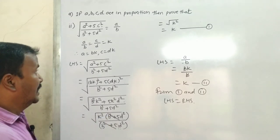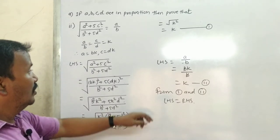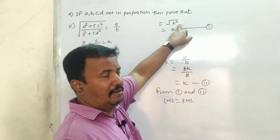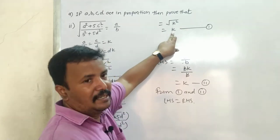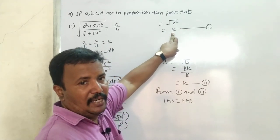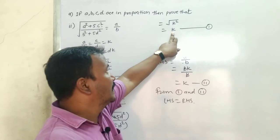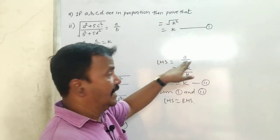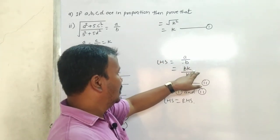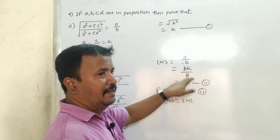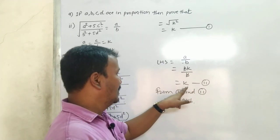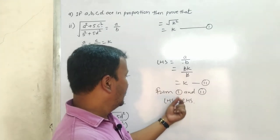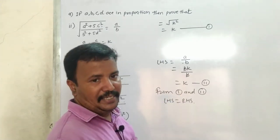We are left with √(k²) inside the root, which gives k. Now for LHS: a/b = bk/b, and b cancels, giving k. So from (1) and (2), LHS is equal to RHS. Proved.